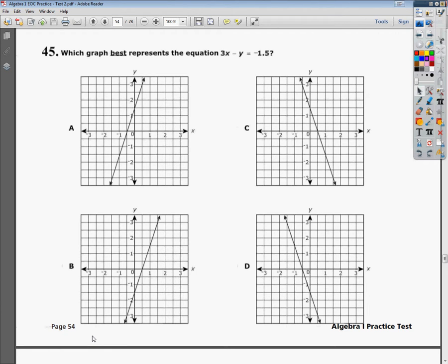Welcome. This is the Algebra 1 Practice Test 2, question number 45. The question says which graph best represents the equation 3x minus y equals negative 1.5. The reality is they throw the word best in there because there's two that look very similar, so you have to be sort of careful.